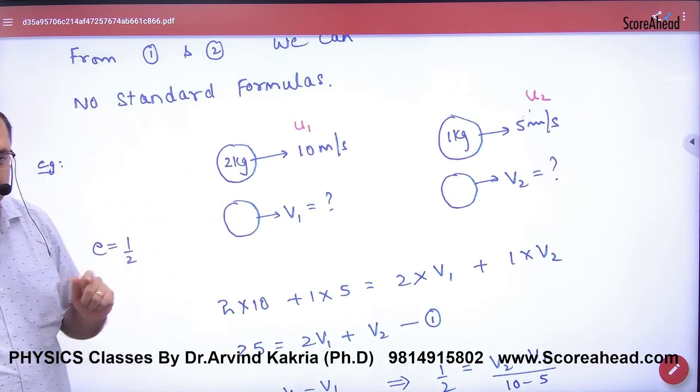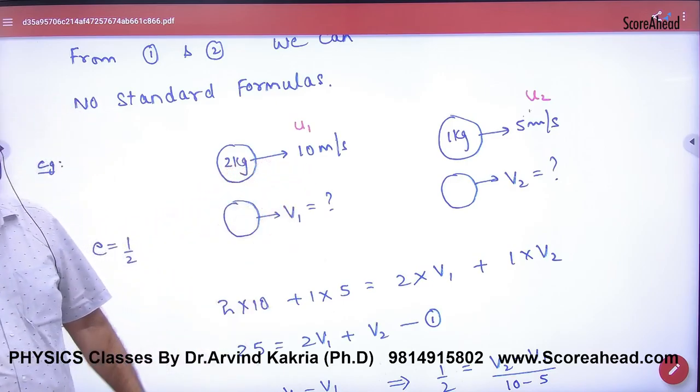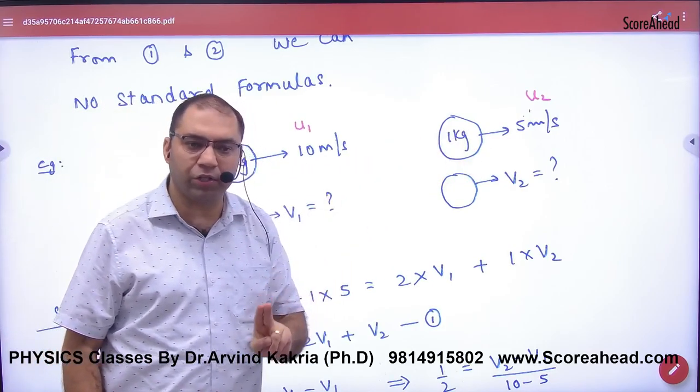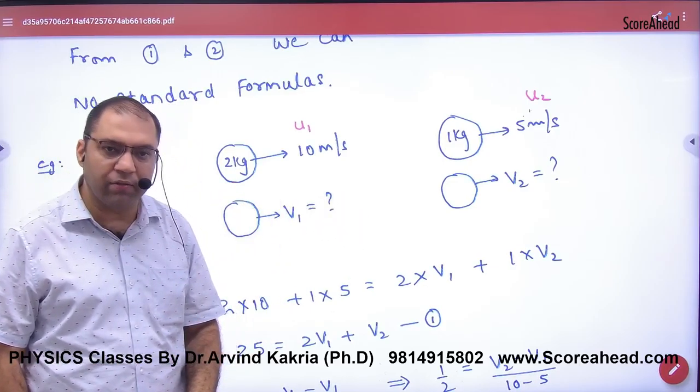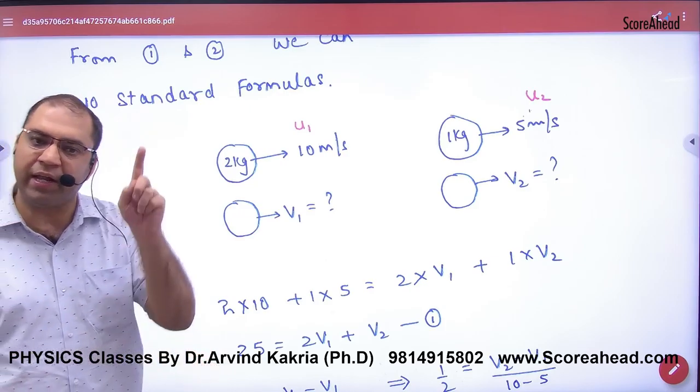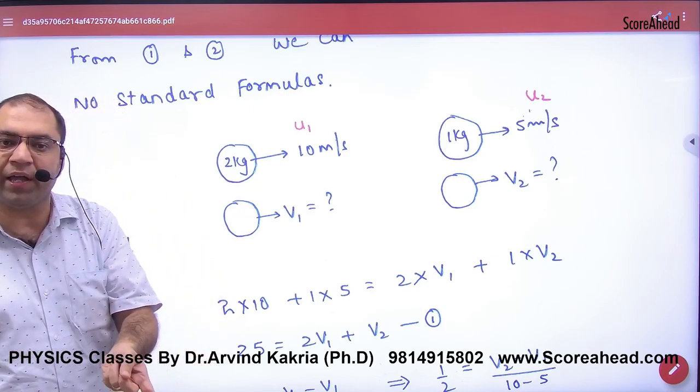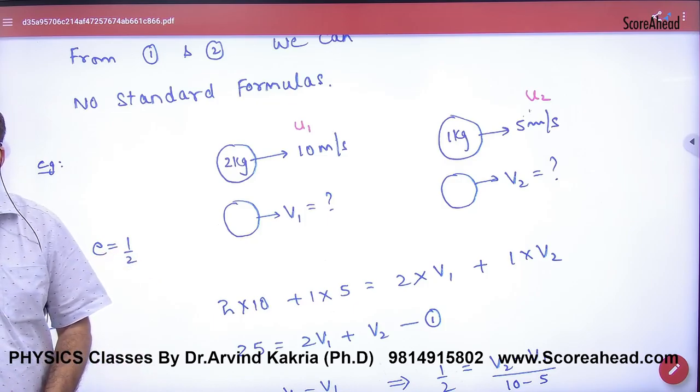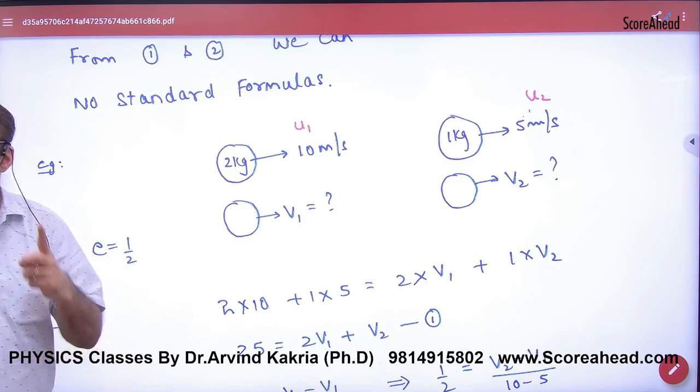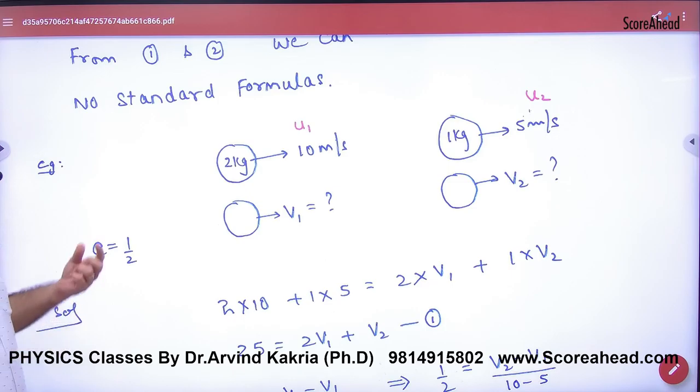For example, I will show you. The question is: one ball 2 kg, M1 is given, moving with U1 equals 10, and the other ball M2 moving with U2. U1, U2 is given. After collision V1, V2. There is no formula because it is inelastic collision. In elastic collision, restitution is 1. In inelastic, restitution is half.